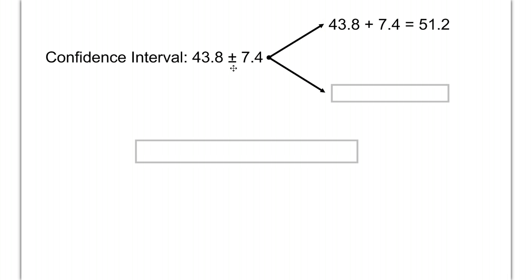Top equation: 43.8 plus 7.4. If we do that in our calculator, we'll get 51.2. Same idea down here, except we're going to subtract, because we're going to do one plus, one minus. 43.8 minus 7.4 is going to be 36.4.